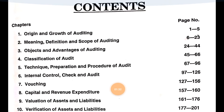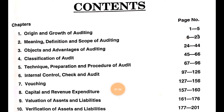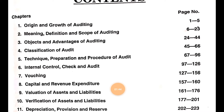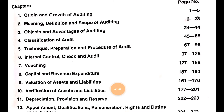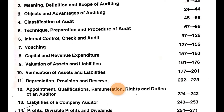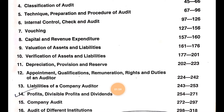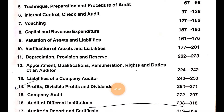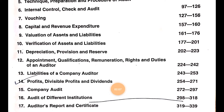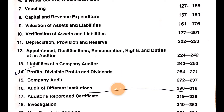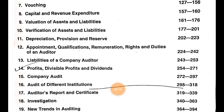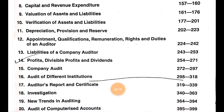This is the list of chapters. First is origin and growth of auditing, meaning, definitions and scope of auditing, objects and advantages of auditing, classification of audit techniques, preparations and procedure of audit, internal control, check and audit, vouching, capital and revenue expenditure, valuations of assets and liabilities, verifications of assets and liabilities, depreciations, provisions and reserves, appointment, qualification, remuneration, rights and duties of an auditor, liability of a company auditor, divisible profit and dividends, company audit, audit of different institutions, auditors report and certificate, investigation, new trends in auditing, and audit of computerized accounts. These are the 20 chapters.